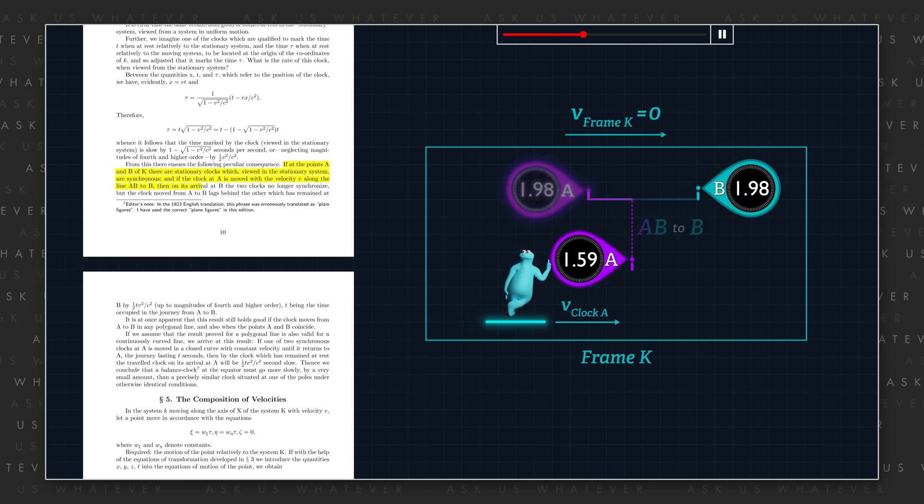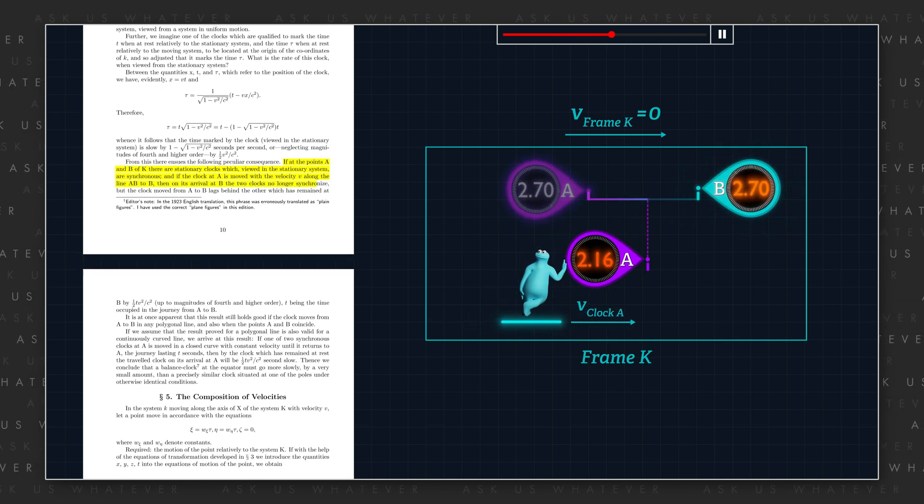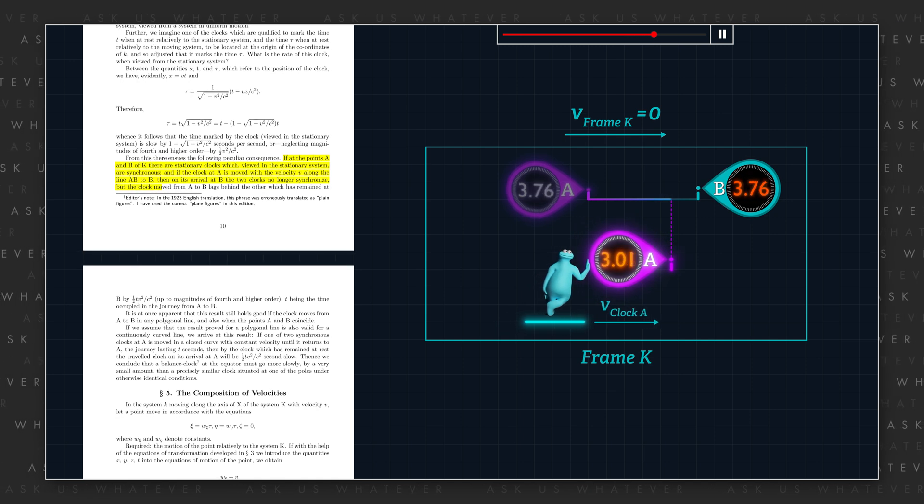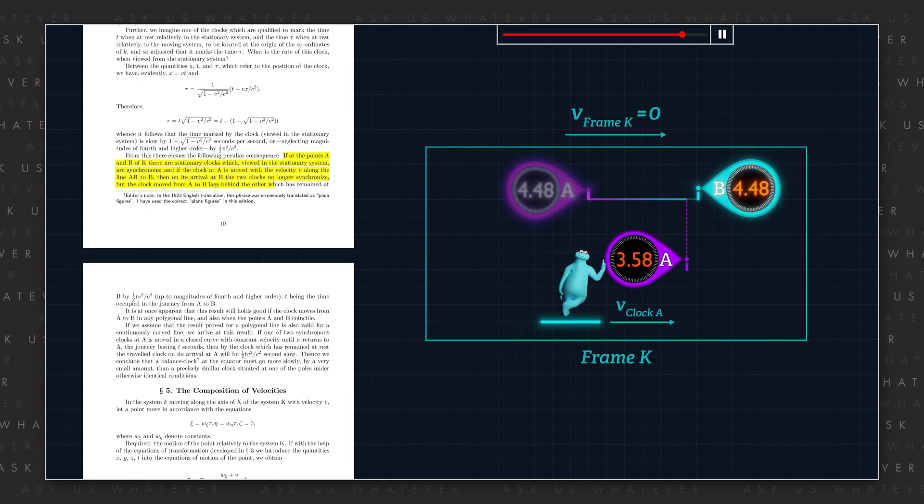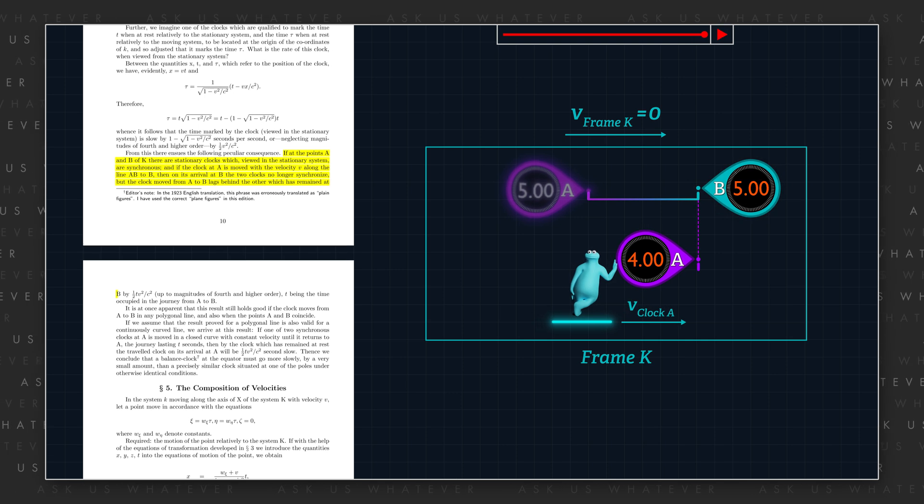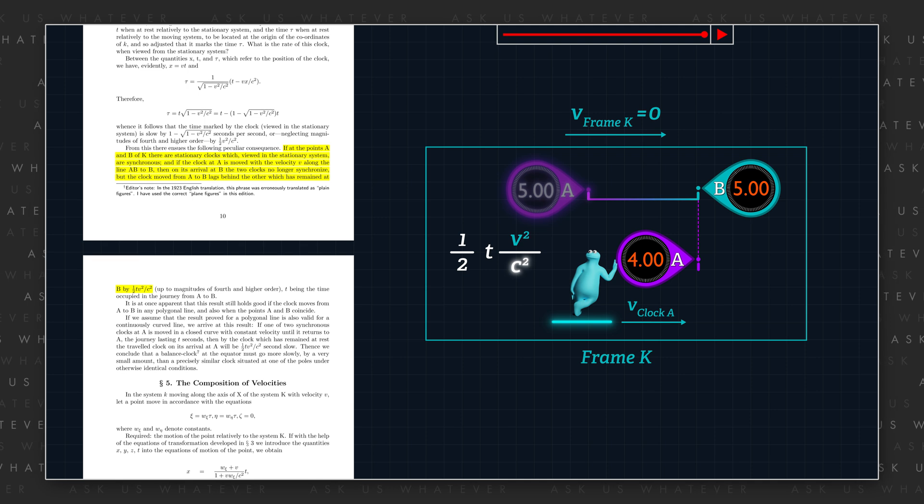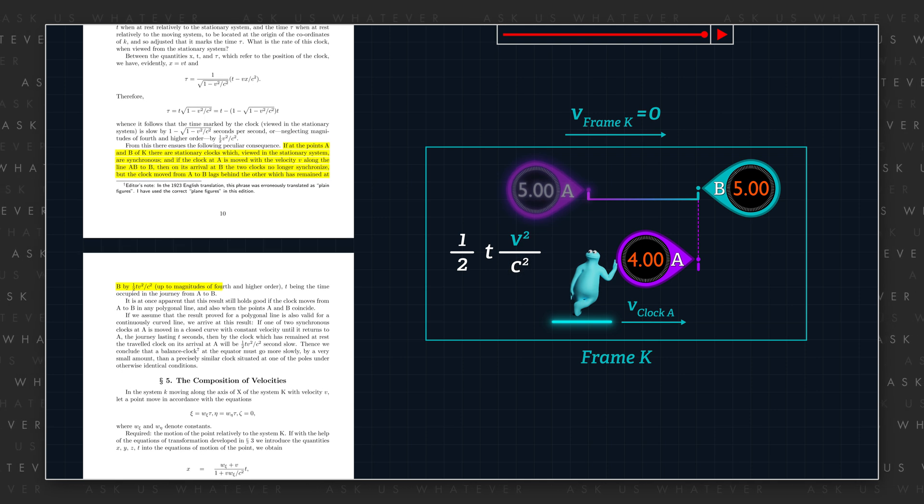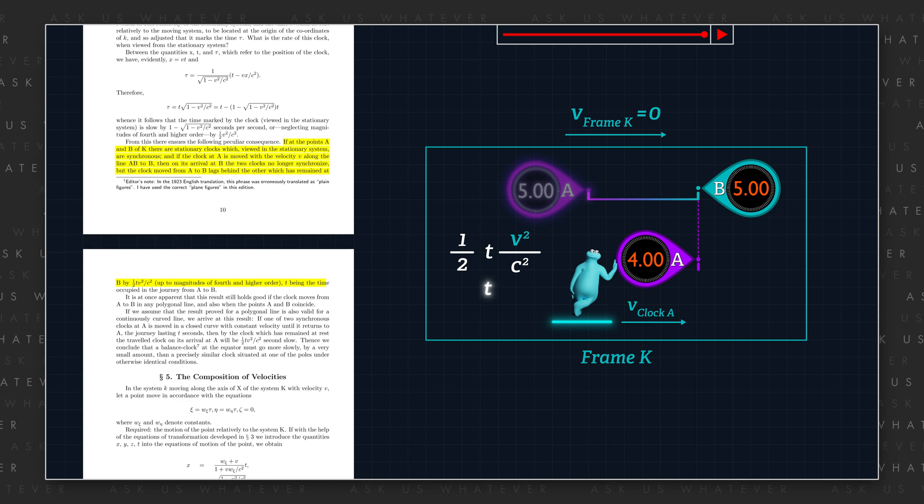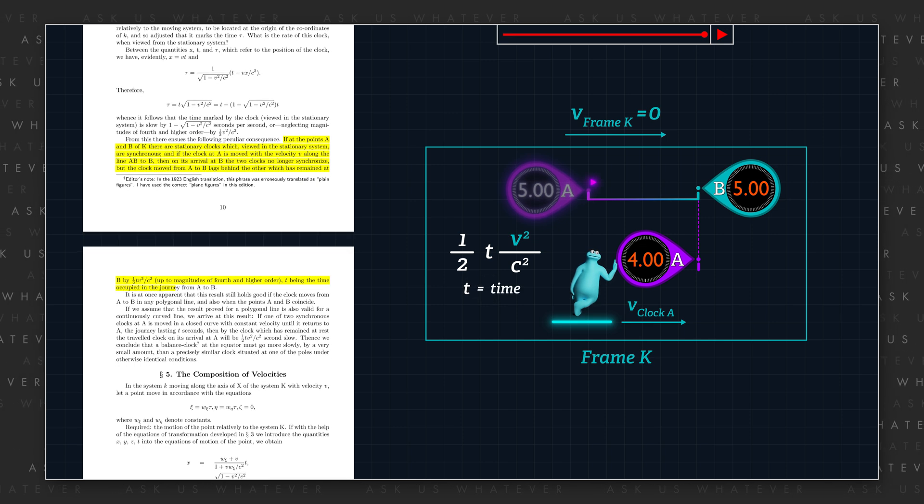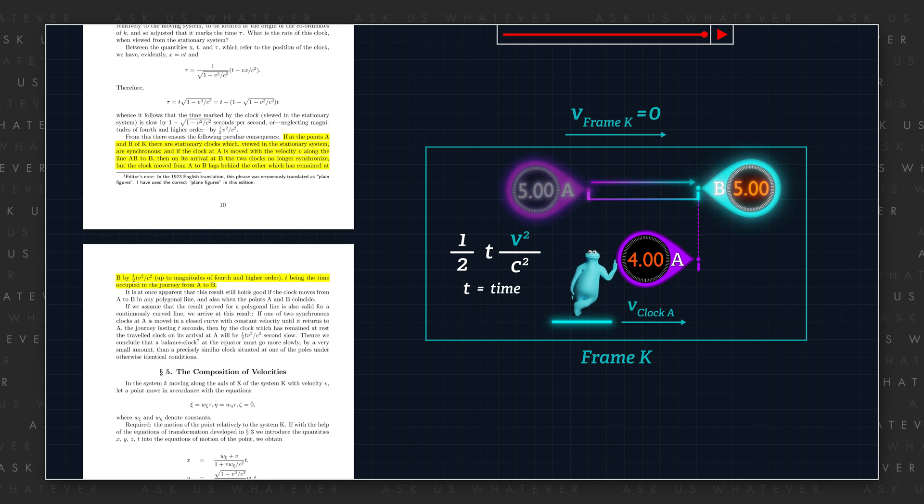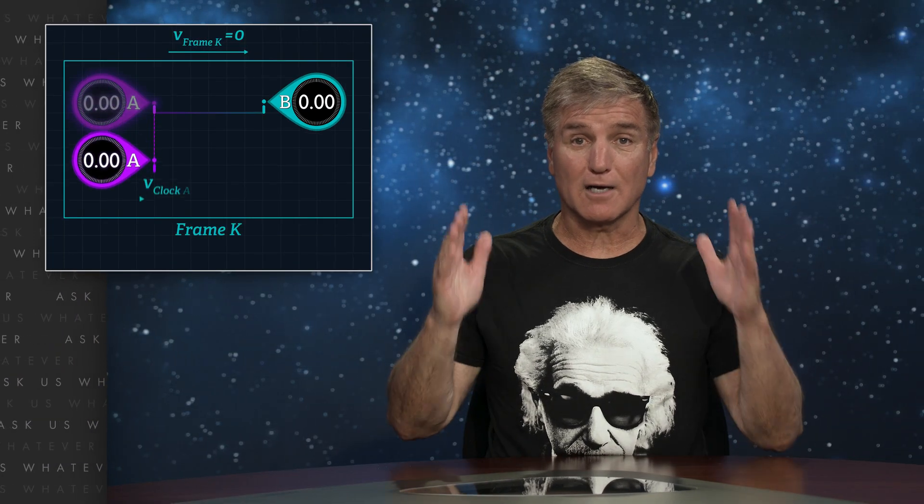"then on its arrival at B, the two clocks no longer synchronize, but the clock moved from A to B lags behind the other, which has remained at B by one half Tv squared over C squared, up to magnitudes of fourth and higher order, T being the time occupied in the journey from A to B."